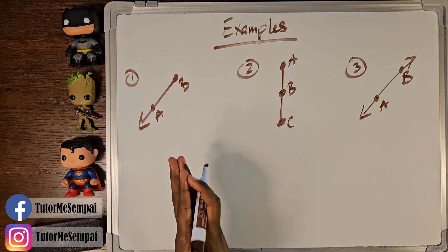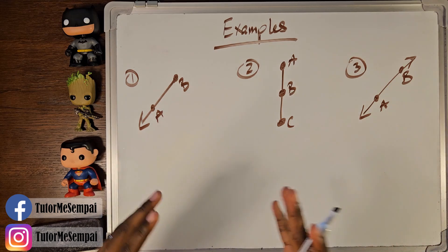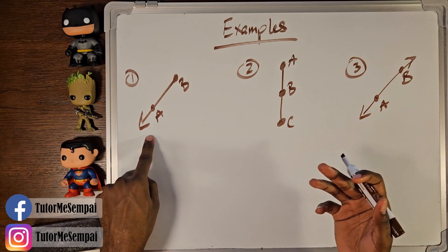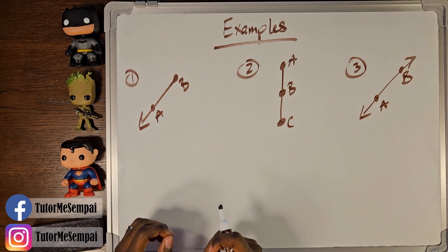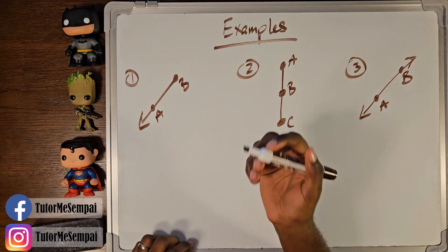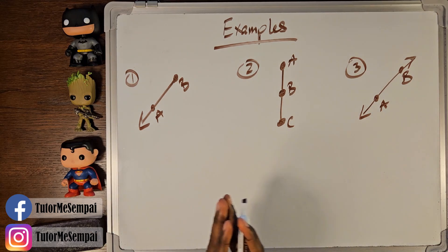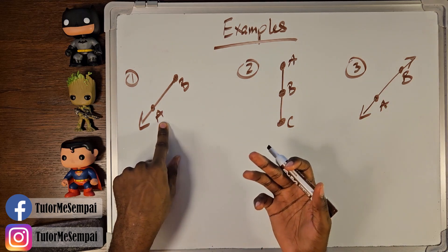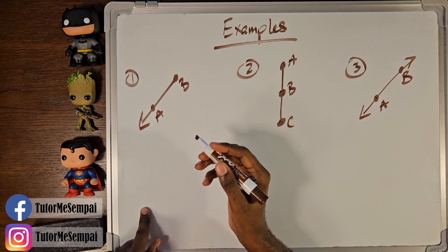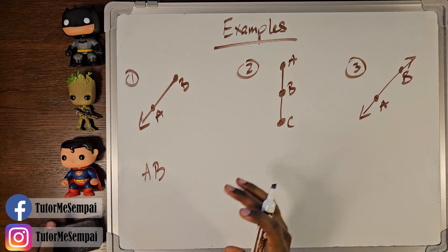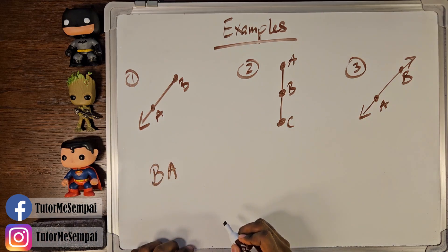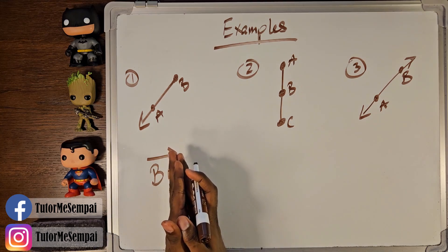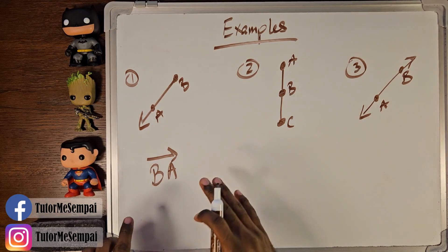For these examples, I want us to name all the lines, line segments, and rays that we see. Try to find all the names you can possibly think of. Starting with number one — we have a ray with two points. What's our starting point? Our B is the starting point, so don't try to do AB. We want to start with B, so it's going to be BA with a ray arrow on top. This is ray BA, and we can't swap that. There are no more points, so this is the only way we can write it.